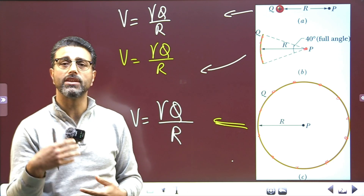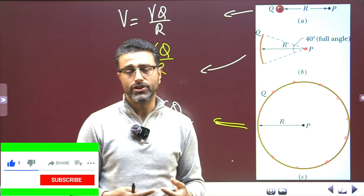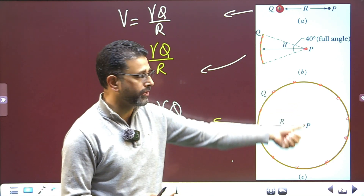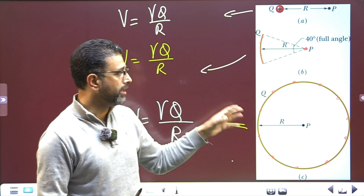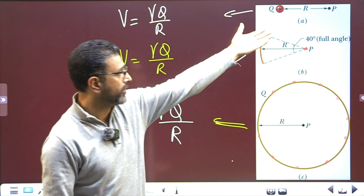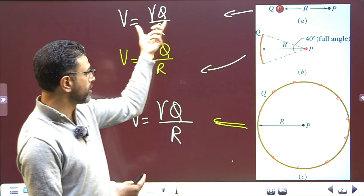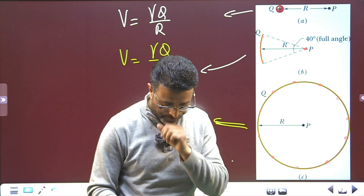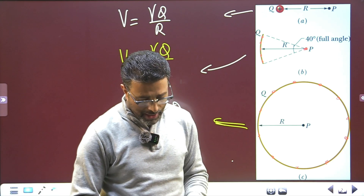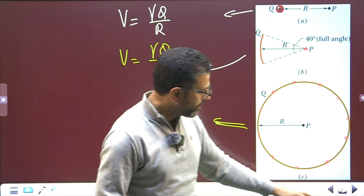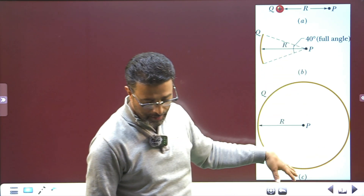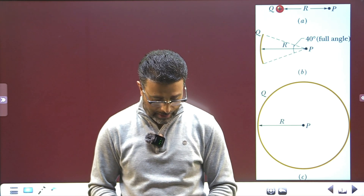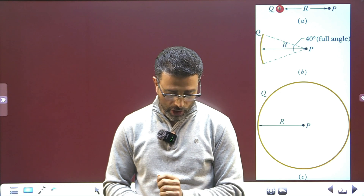This only happens because potential is a scalar quantity. With the electric field, this would not be the case — the electric field is a vector quantity and we have to consider vector addition, accounting for directions of the field due to different elements. So the electric field won't be the same in all three cases, but the electric potential is the same in all three cases. In part (d), we have to rank the three situations according to the magnitude of the electric field at point P, greatest first.